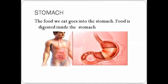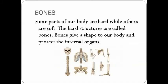Stomach. The food we eat goes into the stomach and is digested there. In this picture you can see where the stomach is located. In our body there are soft parts and hard parts. The hard parts of our body are called bones. Bones give our body shape and protect the internal organs.